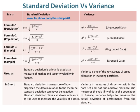Standard deviation is primarily used as a measure of market and security volatility in finance. Whereas variance is one of the key aspects of asset allocation in investing portfolios.